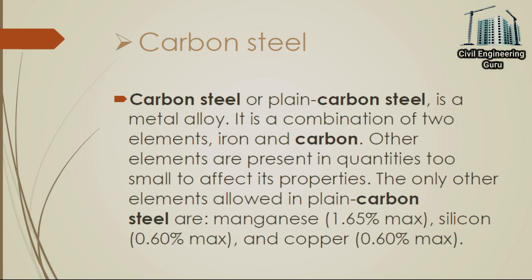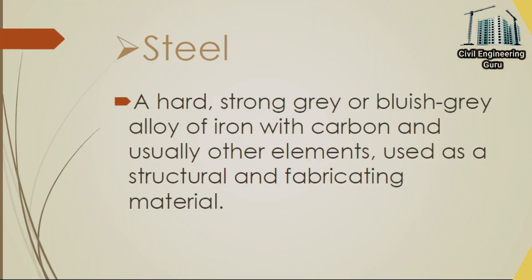Other elements are present in quantities too small to affect its properties. The only other elements allowed in plain carbon steel are: manganese (1.65% max), silicon (0.60% max), and copper (0.60% max). Now moving toward the definition of steel: a hard, strong gray or bluish-gray alloy of iron with carbon and usually other elements, used as a structural and fabricating material.